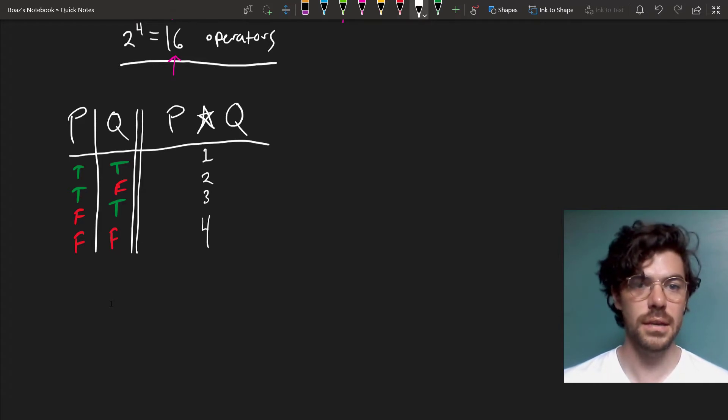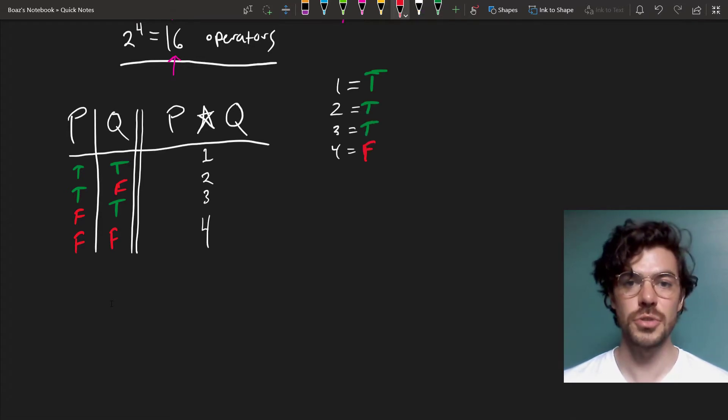Now, if star were OR, then we would have something like this. First value equals T, second value equals T, third value equals T, and the fourth value equals F, and that's just our truth table for OR.